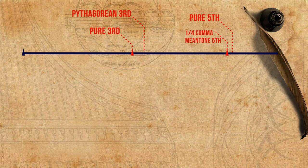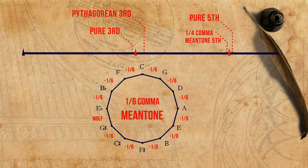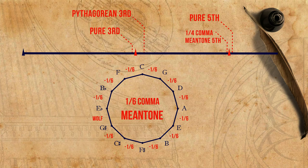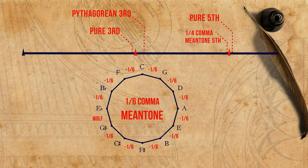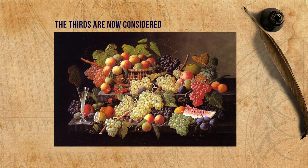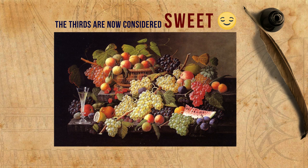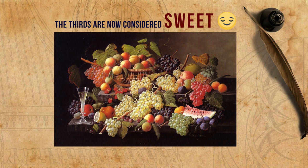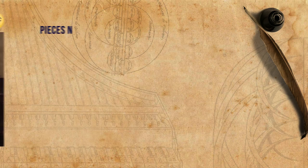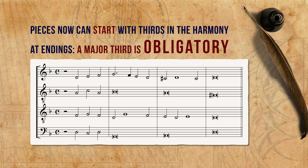In other variants of meantone, such as sixth-comma meantone for example, the thirds are slightly wider than pure and the fifths are slightly less tempered, but the same concept of favoring the thirds is kept. The thirds are now considered sweet according to the sources, and are not creating tension. Accordingly, and as opposed to compositions in the medieval period, pieces now can start with thirds in the harmony, and at endings a major third is obligatory, regardless of whether the piece is in a major or a minor mode.